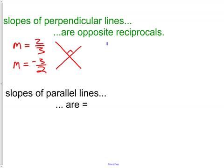Another example, we could have the first line have a slope of negative two-sevenths. Can you think of what the line perpendicular to that would have for a slope? It would be positive seven-halves, or the opposite reciprocal.